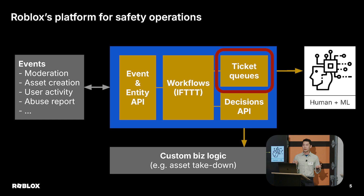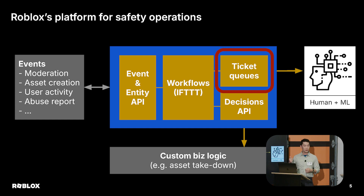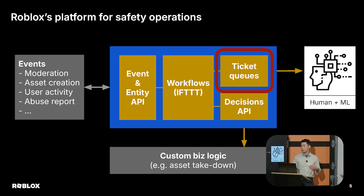This platform is open to all feature development teams at Roblox, because safety doesn't want to be a bottleneck. For example, the ads team can just say they want to plug in — they have new moderation requests because new ads got created. They can define a new queue themselves without talking to the safety team, have their own PM staffed, and test during A/B rollout.